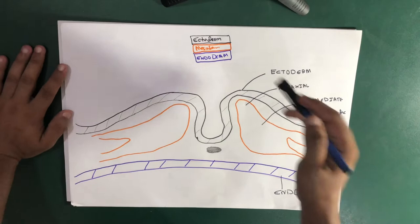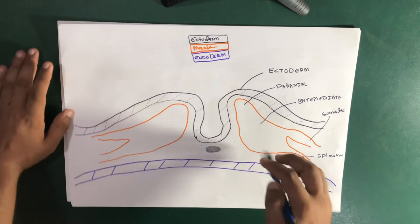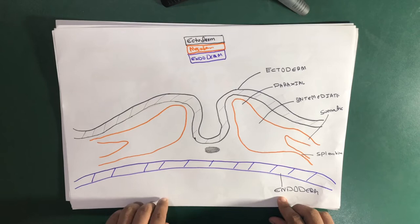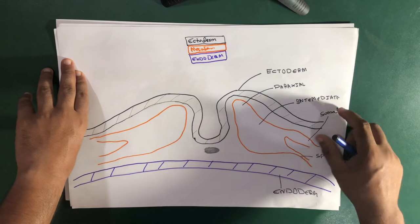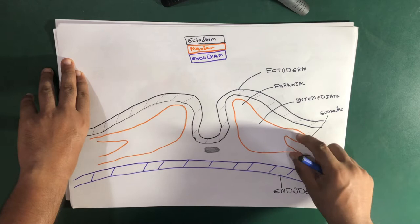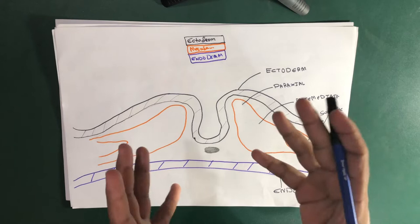Using this color coding, you can understand the layers: the most dorsal structure is the ectoderm, the mesoderm is shown in orange, and the endoderm is in green. The mesoderm has different parts: the paraxial part, the intermediate part, and at the lateral side the mesoderm divides into a somatic part and a splanchnic part.